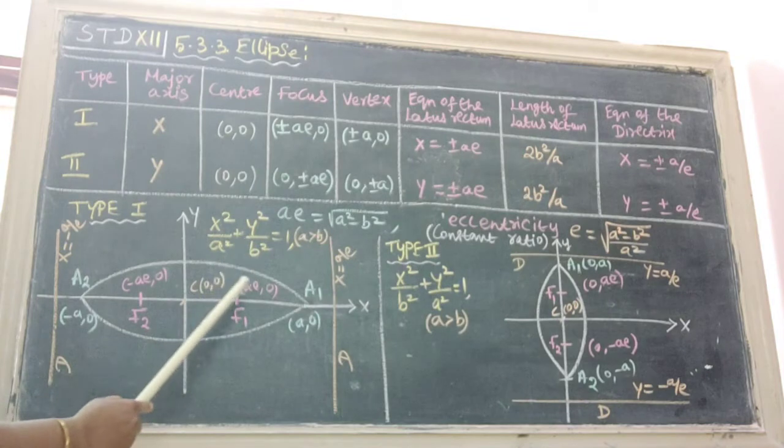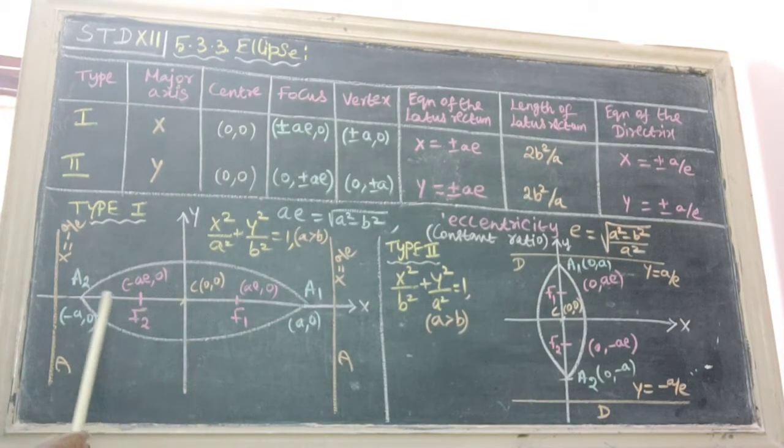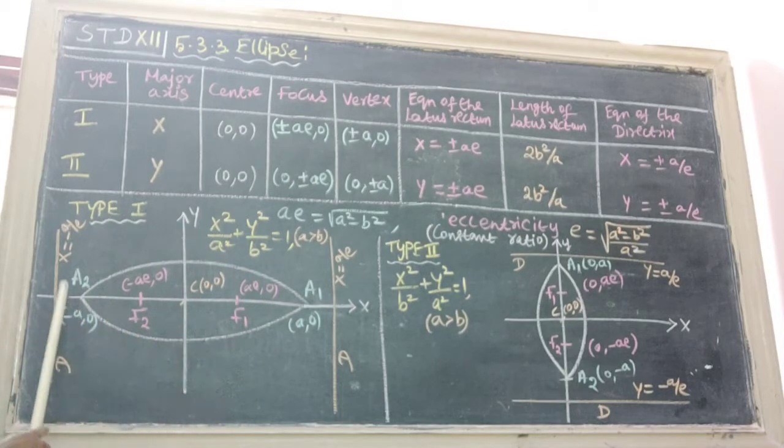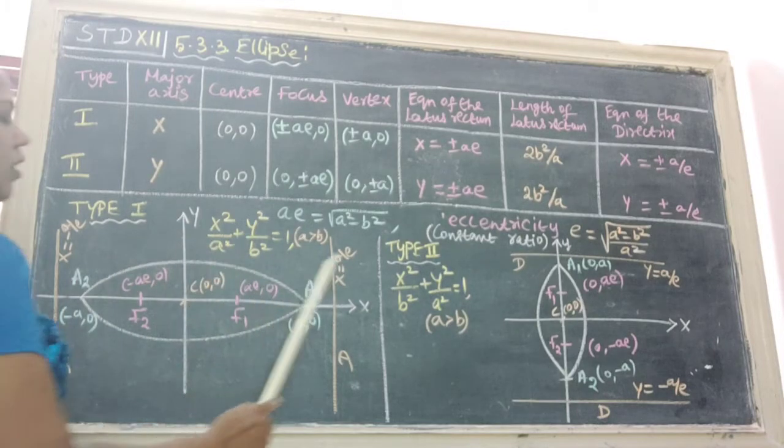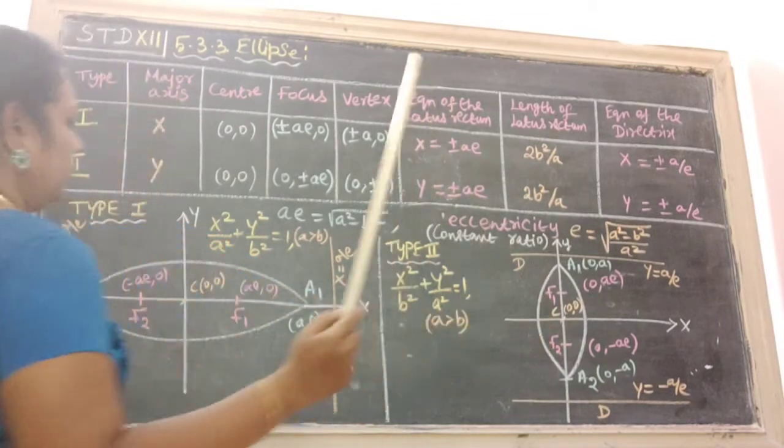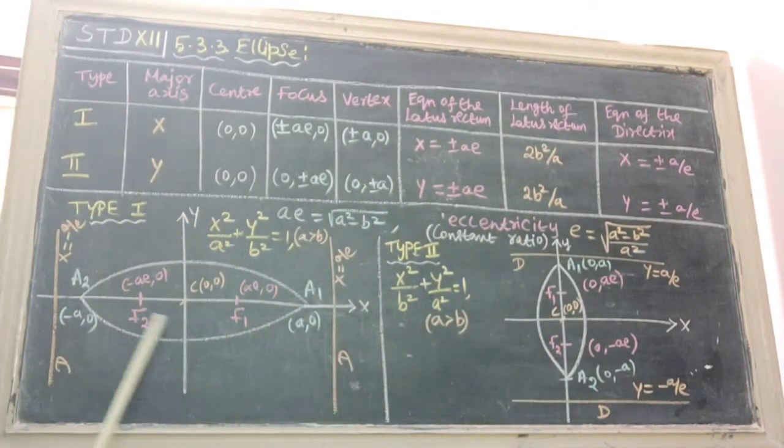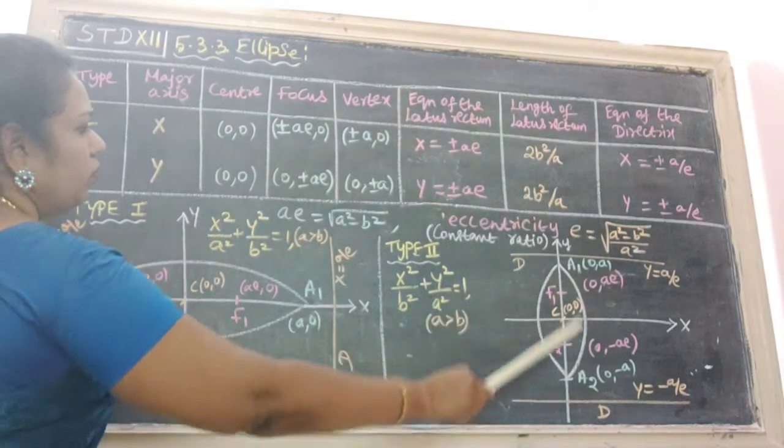Type 1 we see the diagram, x axis y axis. That is our ellipse. Type 1, that is type 2. This is our ellipse. Ellipse is horizontal. Type 2 is vertical.